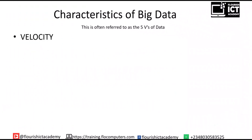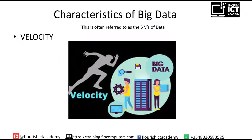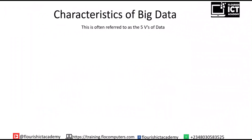The fourth V from the five Vs of data is velocity — we're talking about the rate and speed at which data is being generated today. Sometimes you want your analysis to be in real time, but the speed at which data is being generated is so high that it affects real-time analysis of data.